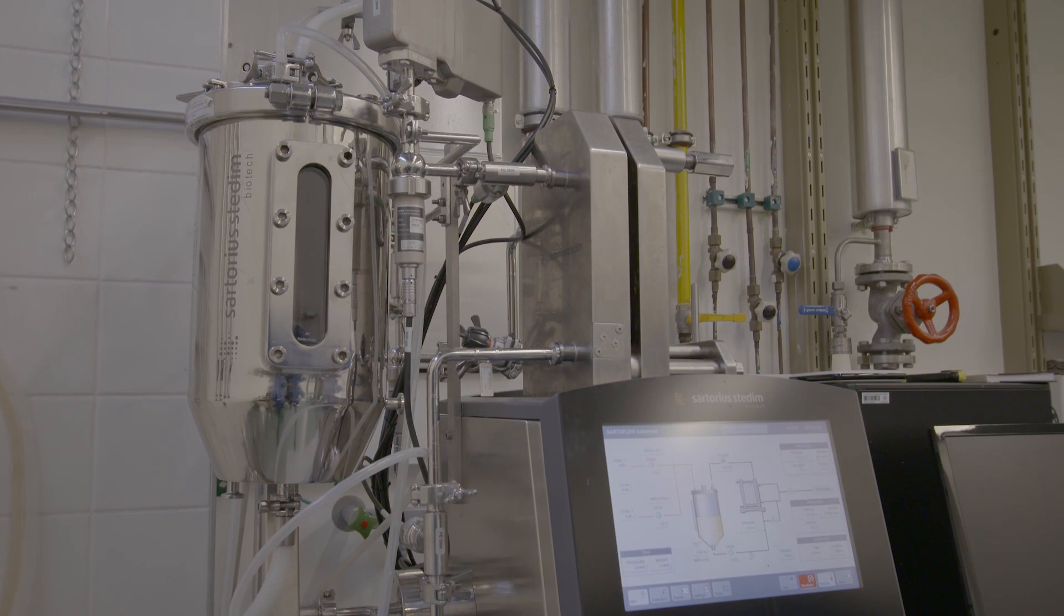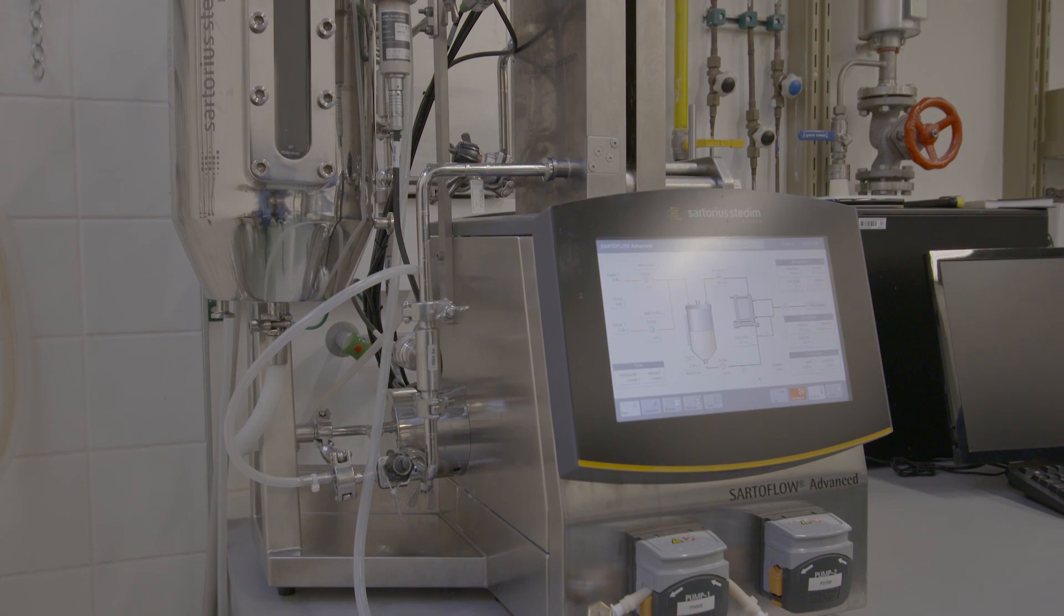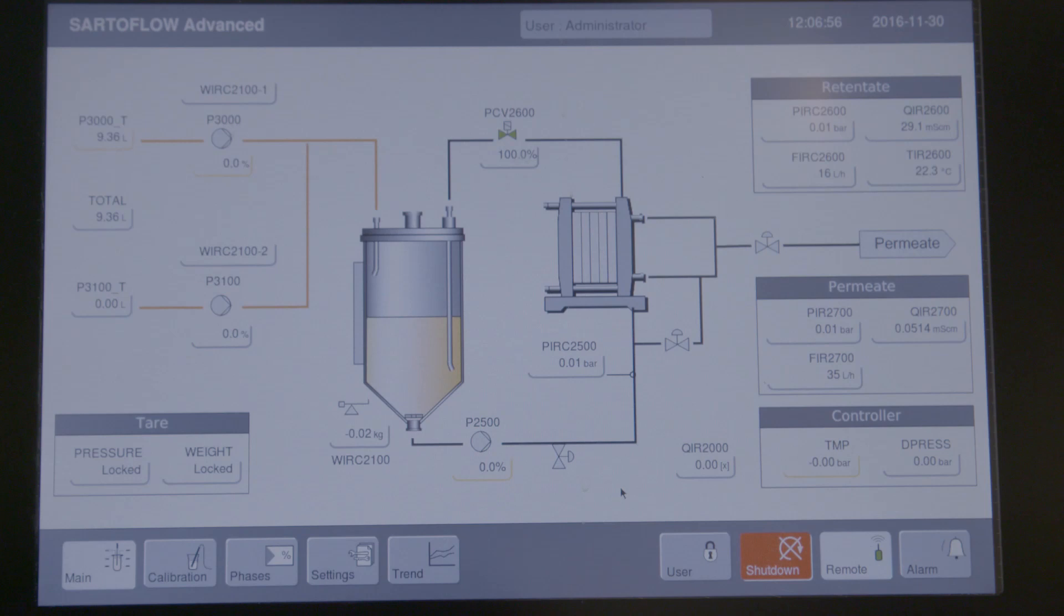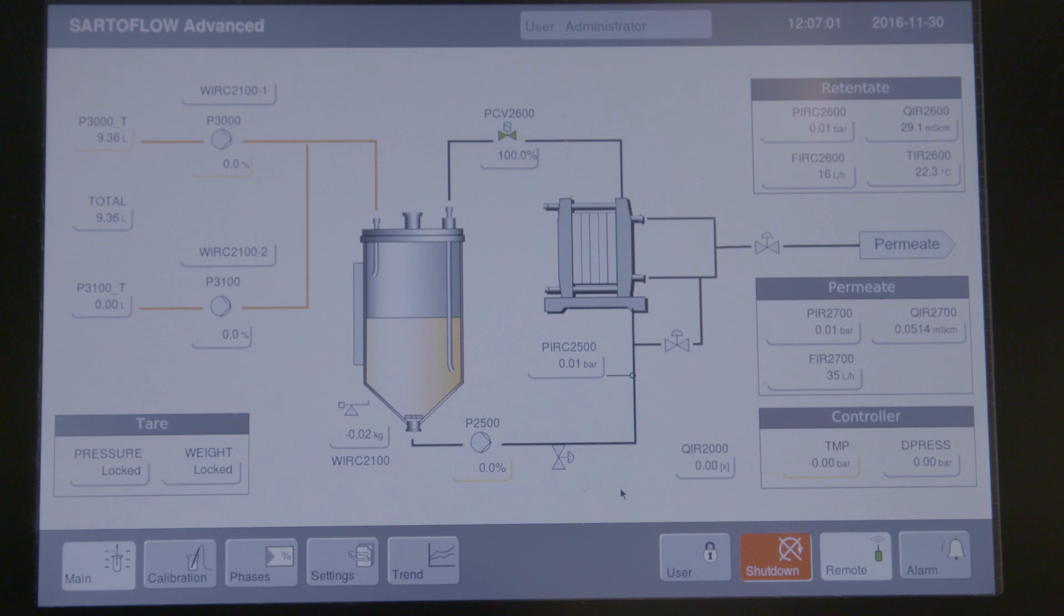Ultrafiltration is a unit operation used in many industrial processes. At the pilot plant, we are equipped with a semi-automated device for operation ranging from 0.1 up to 2 square meters of membrane area. Flow rates can be as high as 600 liters per hour.